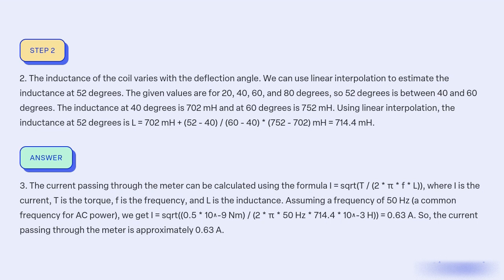Assuming a frequency of 50 Hz, a common frequency for AC power, we get I = √[(0.5 × 10⁻⁹ Nm)/(2π × 50 Hz × 714.4 × 10⁻³ H)] = 0.63 A. So the current passing through the meter is approximately 0.63 A.